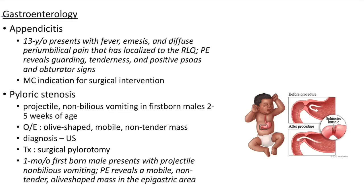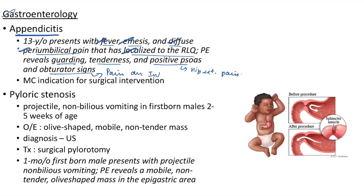Appendicitis case: 13-year-old presents with fever, emesis, and diffuse periumbilical pain that has localized to the right lower quadrant. Physical examination shows guarding, tenderness, and positive psoas sign (pain on hip extension) and obturator sign (pain on internal rotation of hip). Appendicitis is the most common indication for surgical intervention in children.